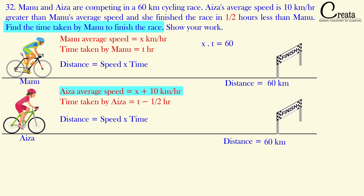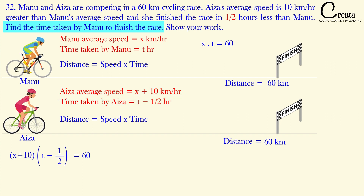Using the same principle for Aiza's case: distance is 60 km, speed is x plus 10, and time is t minus 1/2. So speed into time equals distance gives us: (x + 10) into (t − 1/2) equals 60. In this equation we have to find the value of t.